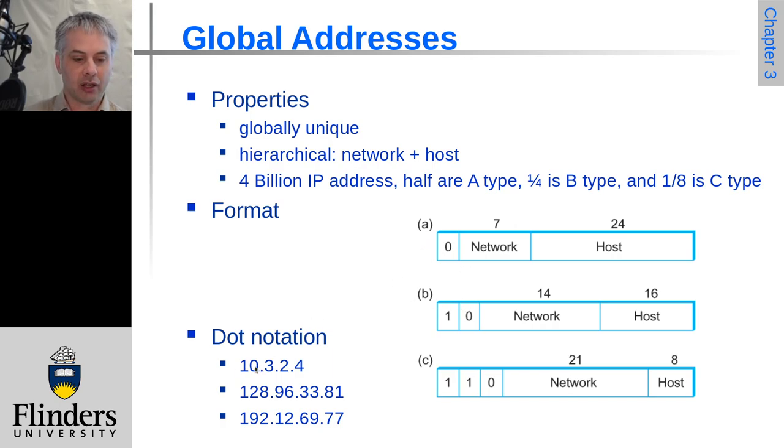So for example, the 10 network that's actually now used for a different purpose was originally one of these because 10, if we put that into binary in that first byte position, is less than 128, which means the 7th bit, the top bit will be 0, and therefore it will be a class A address.